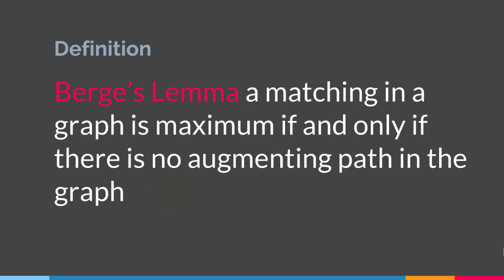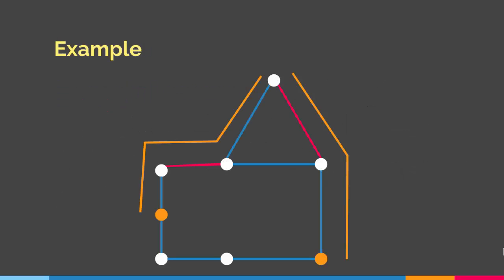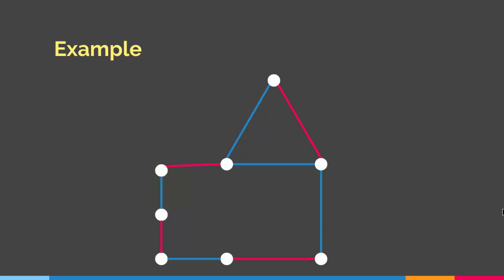So Berge's Lemma says that a matching in a graph is maximum if and only if there is no augmenting path in the graph. If we have an augmenting path in the graph then the matching we have in that particular graph is not maximum. So let's say we have a graph like this — since we have an augmenting path here, this match is not maximum. However if you switch around the path such that the condition of the augmenting path is not present anymore, meaning we don't have any free vertices, we create something like that. Here we don't have any augmenting path in the graph, therefore this is a maximum matching.